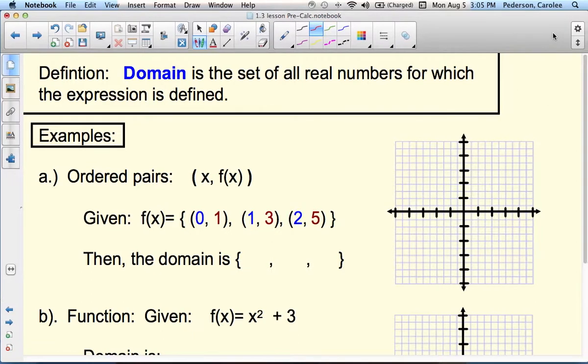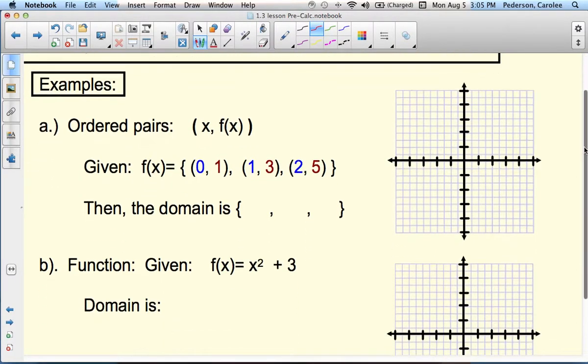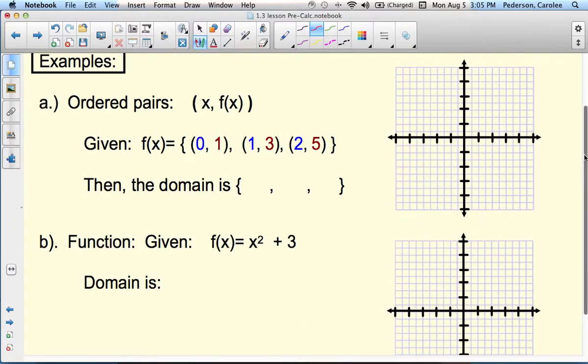The first example is when you're given some ordered pairs, x comma f(x). So the ordered pairs are (0, 1) and then (1, 3) and (2, 5). The domain are going to be the blue pieces. What is the x values?